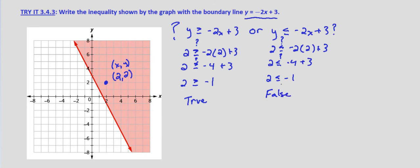So this indicates that the direction of our inequality symbol is greater than. We include the equals because the boundary line y equals negative 2x plus 3 is solid, indicating that it is part of the solution. So it's an inclusive inequality.